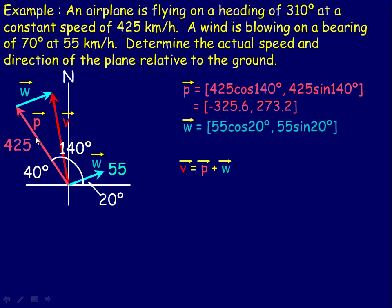For the wind vector, it would be 55 times the cosine of 20, comma, 55 times the sine of 20 — the size of the vector times the cosine of the angle for the x-component, and the size of the vector times the sine of the angle for the y-component. Evaluating those, we get 51.7 for the x-component and 18.8 for the y-component. So for this wind vector, the bottom side is 51.7 and the vertical amount is 18.8.